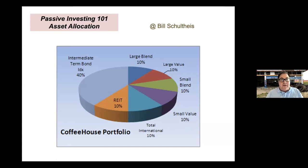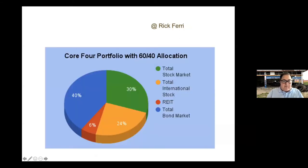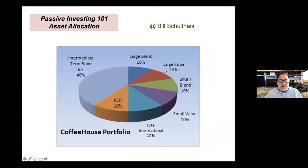Another portfolio from Bill Schultheis, author of 'The Coffeehouse Portfolio,' is a little more complicated. For a 60/40 split: 40% intermediate-term bonds, 10% large blend (S&P 500), 10% large value, 10% small blend, 10% small value, 10% international, and 10% REITs.